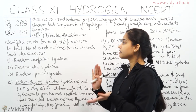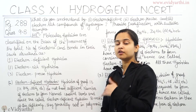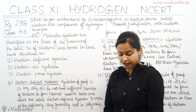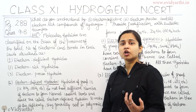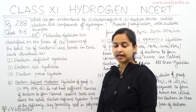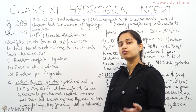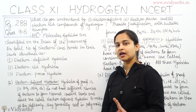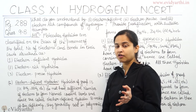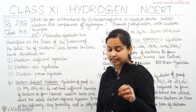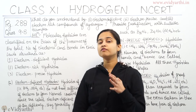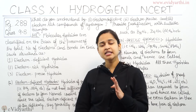Electron deficient hydrides are hydrides which do not have the required number of electrons to form normal covalent bonds. Electron deficient hydrides basically exist in the boron family, that means Group 13. They are electron deficient because they do not have the exact number of electrons to form normal covalent bonds. This is why we call them electron deficient hydrides.